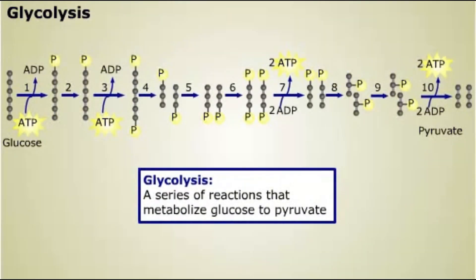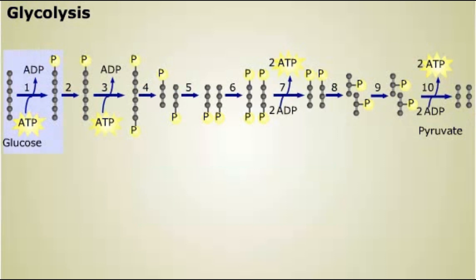Glycolysis is a series of ten reactions that convert glucose to pyruvate. Pyruvate is an intermediate formed when glucose is metabolized to carbon dioxide and water. How do enzymes in this metabolic pathway know which reactions to catalyze? Let's focus on the first reaction in the glycolysis pathway.